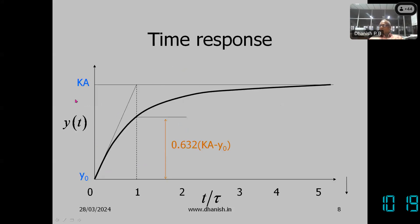If you plot the time response for different values of t over tau (non-dimensionalizing with respect to tau), the output y(t) exponentially increases from y0 to the final value k·A. If it were a zeroth order system, it would go immediately to k·A, but since it is a first order system, it responds slowly and theoretically reaches the final value only after infinite time.